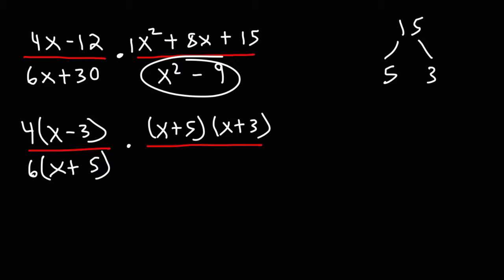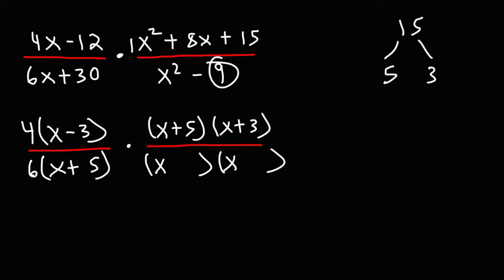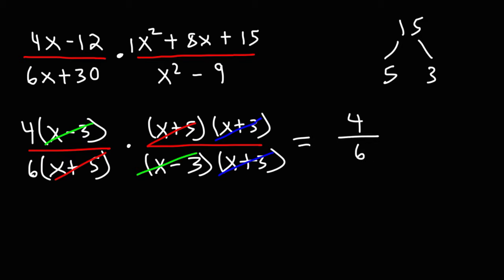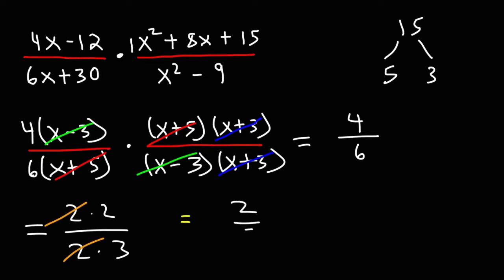And here we have a difference of perfect squares. If we take the square root of x squared, we're going to get x. If we take the square root of 9, we're going to get 3. One is going to be negative, the other is going to be positive. Now that we've factored everything, what we need to do is cancel. We can cancel x plus 3, x minus 3, and x plus 5. So what we're left with is 4 over 6. But now we can reduce this fraction: 4 is 2 times 2, 6 is 2 times 3, so we can cancel a 2. Thus the final answer is 2 over 3.